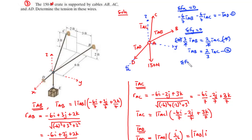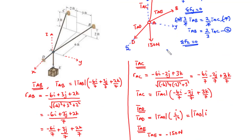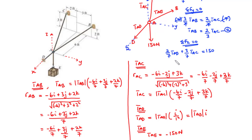For the summation of forces along the Z axis: 2 over 7 TAB plus 3 over 7 TAC minus 150 equals 0. Transposing the 150 to the right-hand side gives 2 over 7 TAB plus 3 over 7 TAC equals 150. We call this Equation 3. We will now substitute Equation 2 into Equation 3.